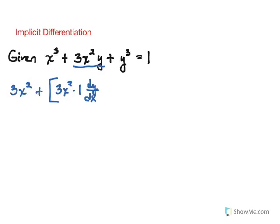So that's the end of the first part of the product rule. Then we have plus. Now we're going to keep the y, and the derivative of 3x squared simply is 6x.